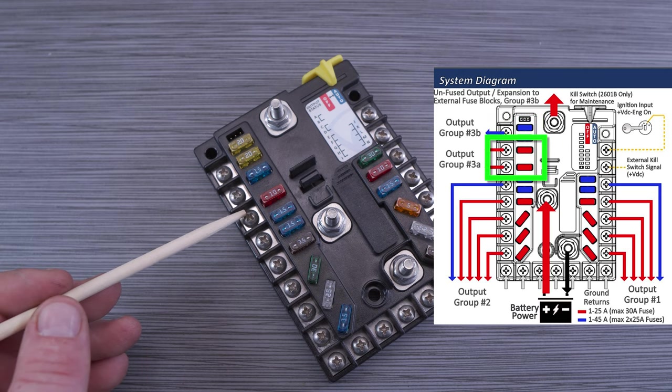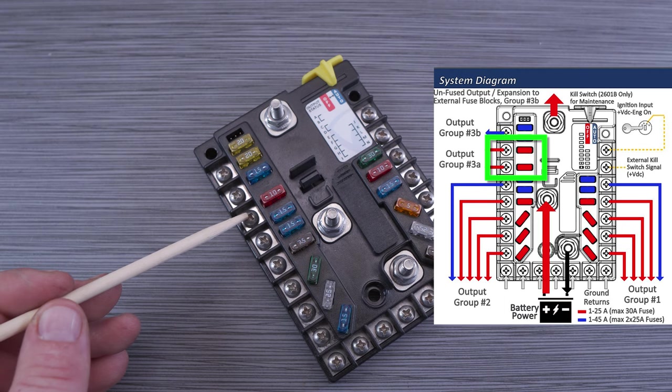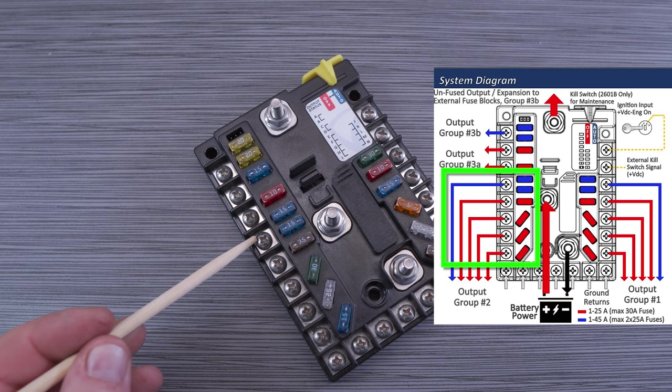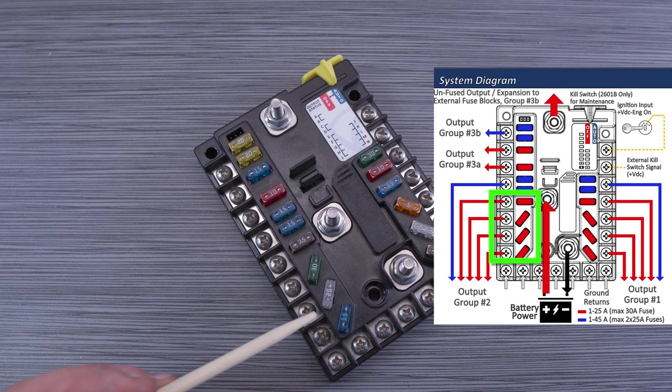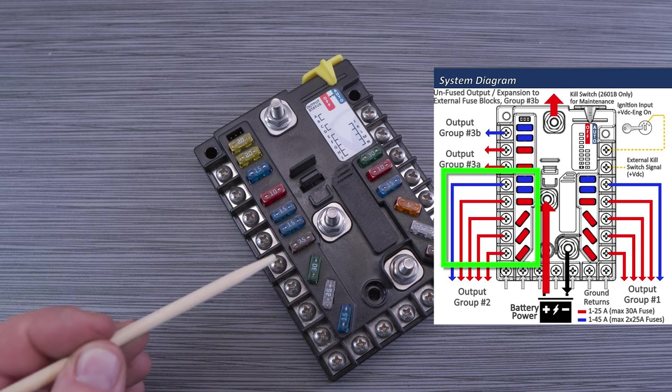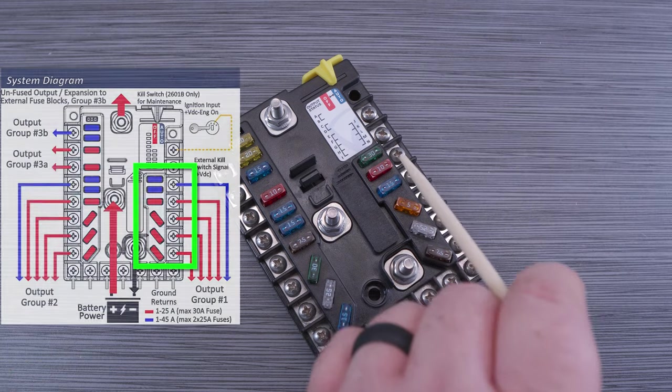Terminal C and D are part of output group 3A and are able to carry up to 40 amps together and 25 amps max through either individual output, so for example a single 25 amp fuse for terminal C and a 15 amp fuse for terminal D. Next we have output group number 2. This has support for a single 45 amp dual fuse circuit at terminal E and four 25 amp circuits for terminal F through I, bearing in mind though total capacity for this group cannot exceed 75 amps.